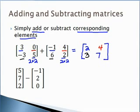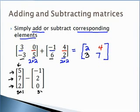In the second example, the first matrix has three rows and one column, so it is a three by one. The second matrix is also three by one, and we want to subtract. So we subtract corresponding elements — but only if the dimensions are the same, which they are — giving us another three by one matrix.